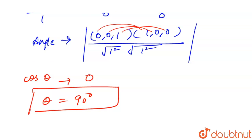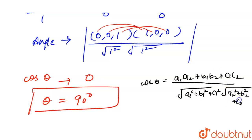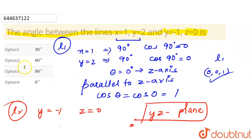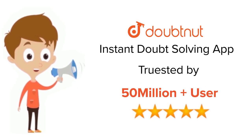The formula used here is: cos(θ) = (a1·a2 + b1·b2 + c1·c2) / (√(a1²+b1²+c1²) · √(a2²+b2²+c2²)), where a1, b1, c1 and a2, b2, c2 are the direction cosines of the two lines. The final answer is θ = 90 degrees, so option 3 is correct.